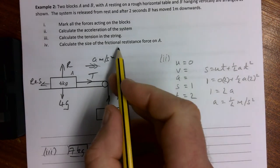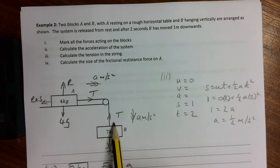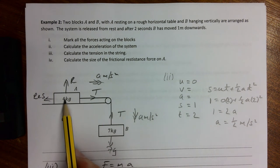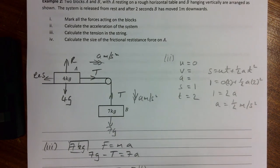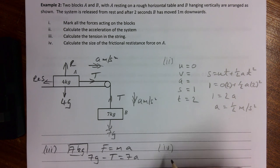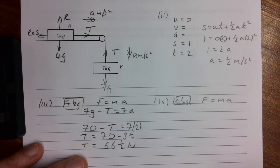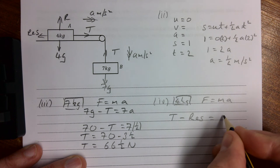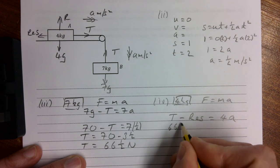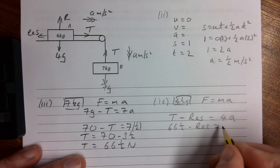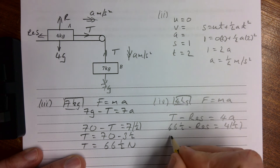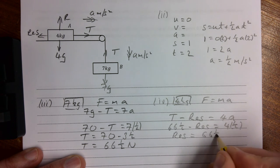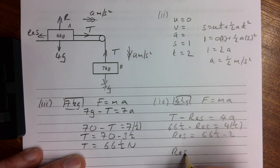Calculate the size of the frictional resistance force on A. We've now found the T doing the F equals MA there, we can use that as our T here and then find our resistance. So it's now going to be F equals MA for the 4 kilogram one. What are we going to have? We are going to have T take away resistance equals 4a. We're going to have 66.5 take away, so our resistance in this case is going to be 64.5.